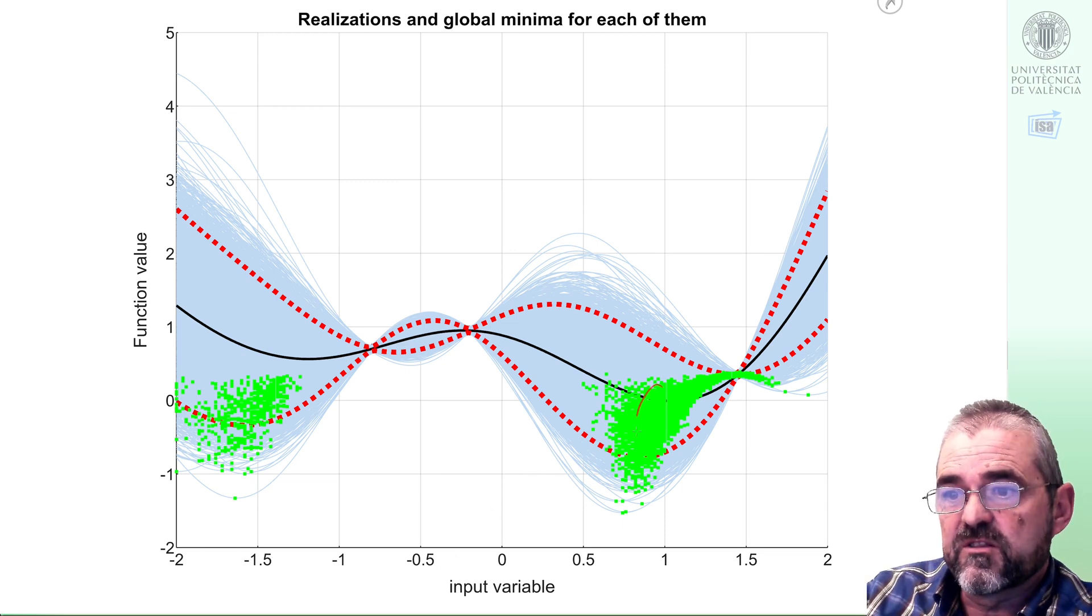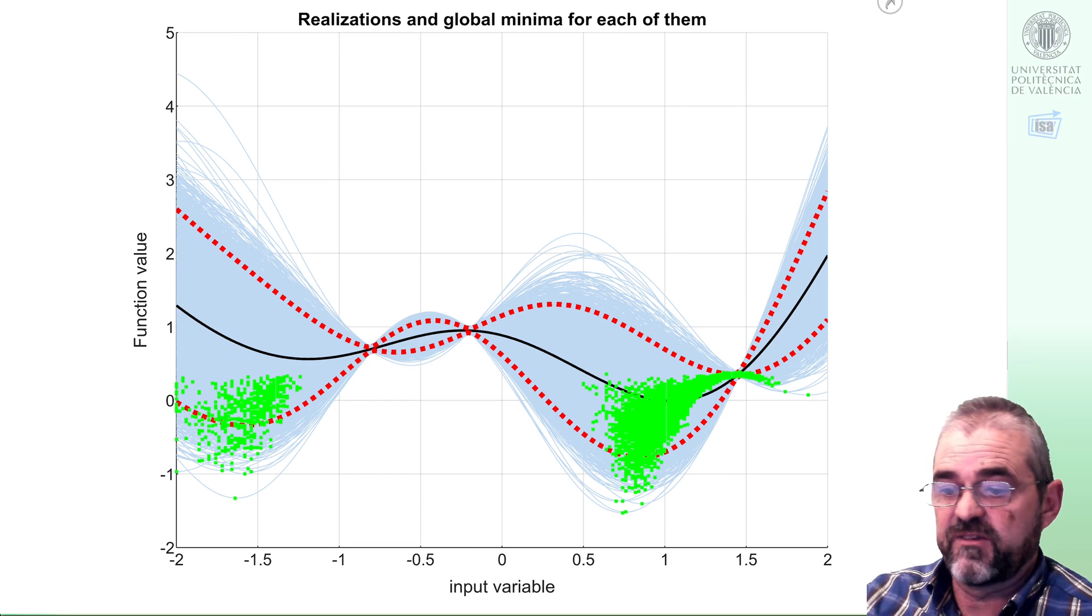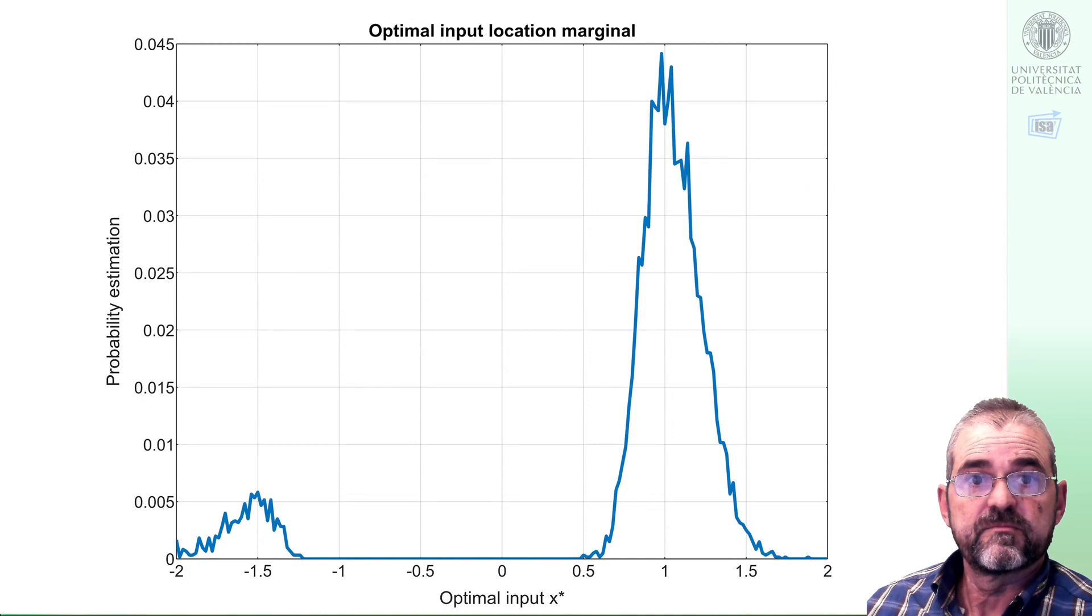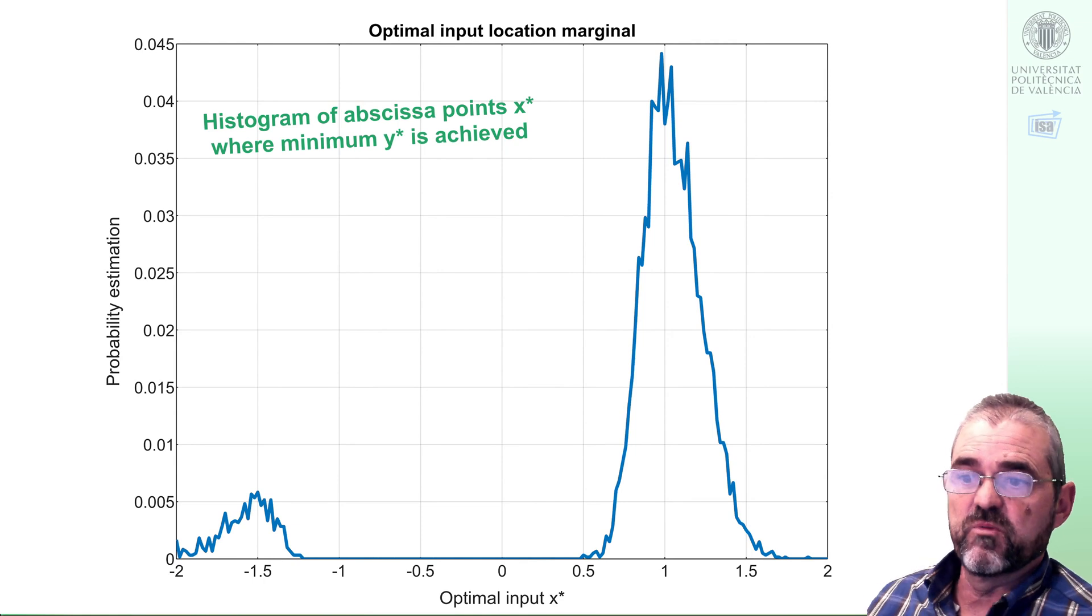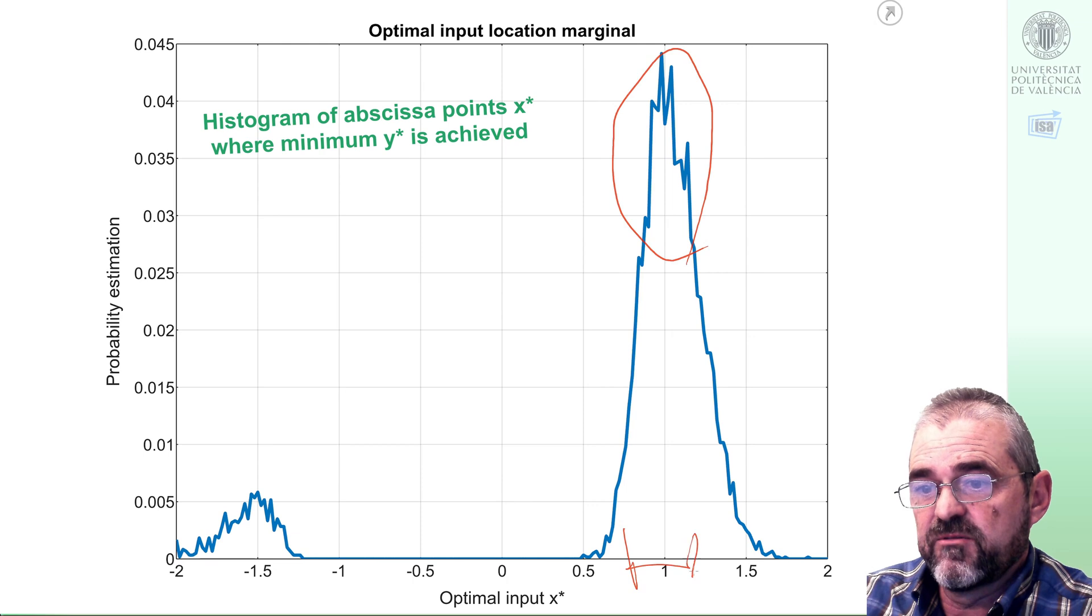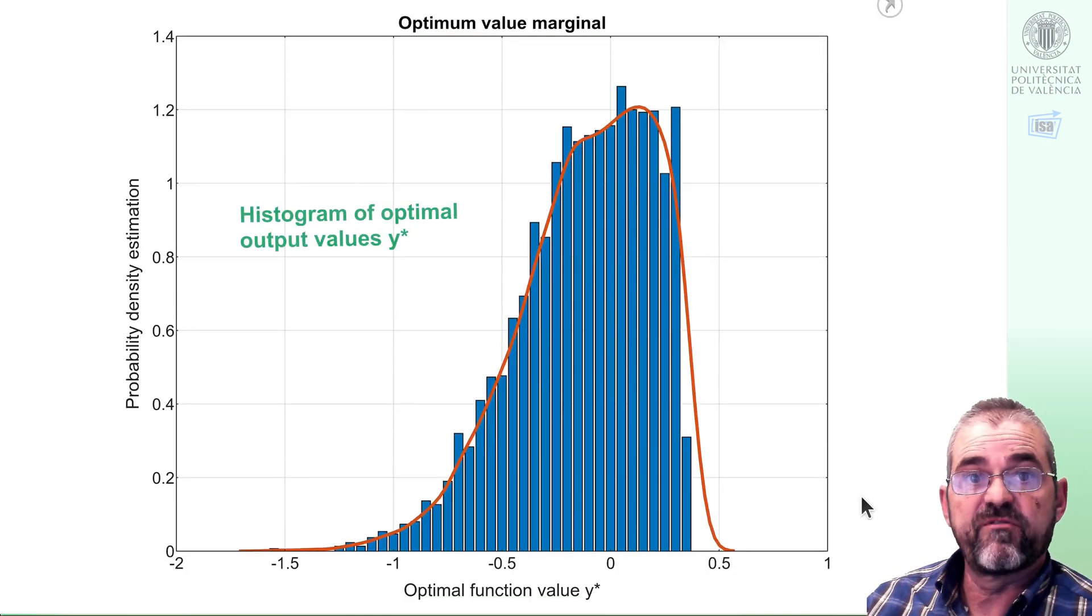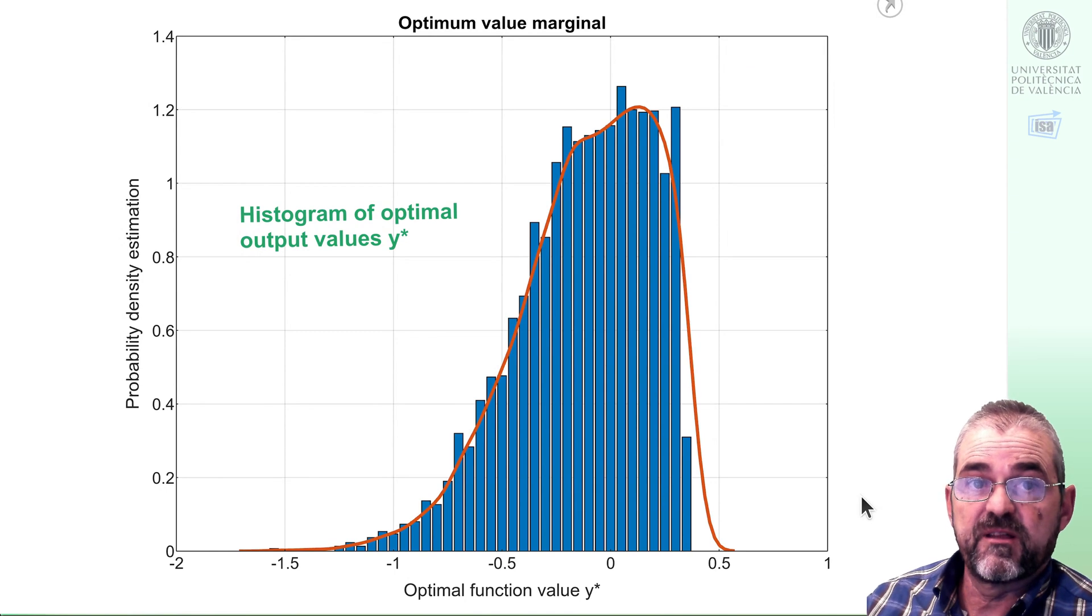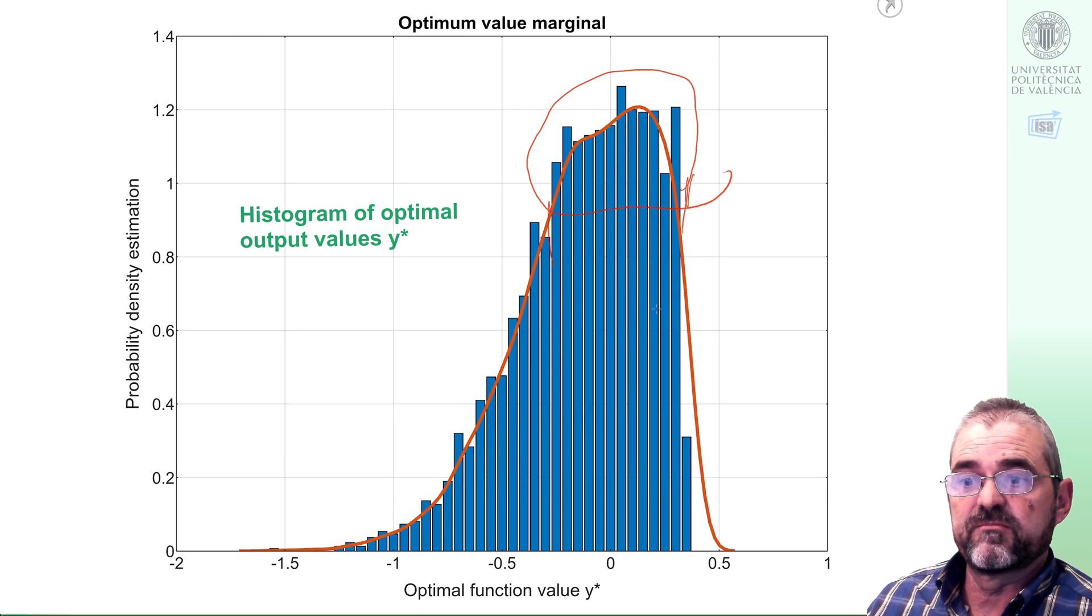In fact, okay, let's compute histograms. So if I project the abscissa coordinate of the 6,000 points, I get the marginal histogram of the input location. So most of the random functions have a minimum around abscissa equal to 1. And I can also carry out a histogram of the output values, this blue histogram. And the red thing is just a smoothed histogram for cosmetic reasons. But most of the optimal values are in this range, let's say, between minus 0.4 and plus 0.4.